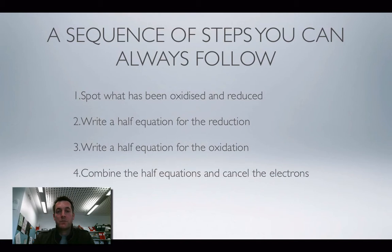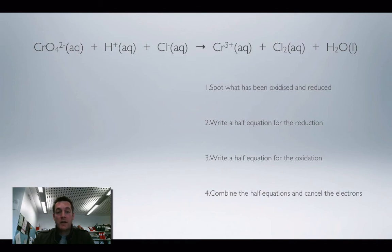So, first of all, I'm going to spot what's been oxidized and reduced, I'm going to write half equations for the reduction and the oxidation, in whichever order I prefer, and then I'm going to combine those half equations in the way that I have before and cancel out the electrons, so I'll end up with a balanced equation. So, most of that should be familiar. The first step of this is the one that's new to this type of problem.